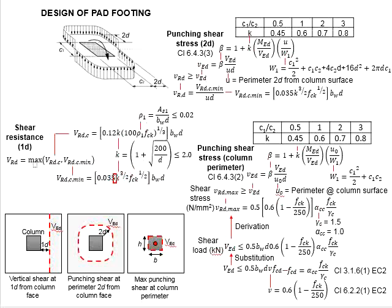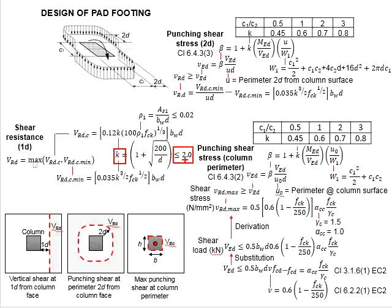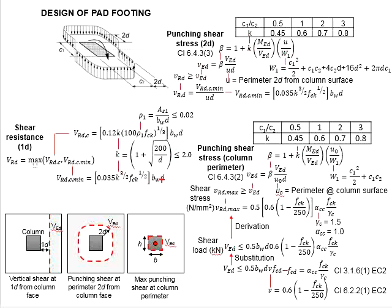The k here is determined from this formula, which is a function of the depth of the section. The value k needs to be less than 2.0. Since we are talking about this critical shear plane, the BD here will be the sectional area of this plane. This length will be the BW and D will represent the depth of the pad footing.